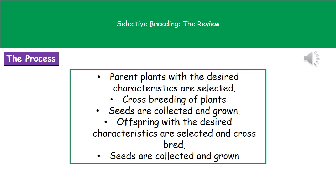We collect those seeds and grow them. Once they've grown, we again go through the process of selecting the offspring that have the characteristics we want, and again we breed those together by transferring the pollen from one plant to another, wait until they produce their seeds, collect the seeds, and grow them.